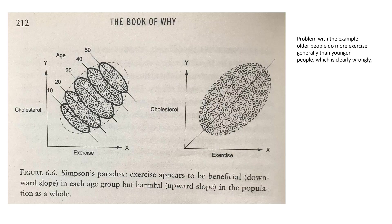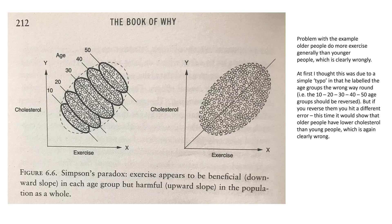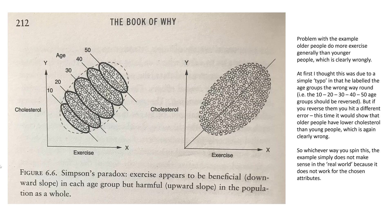The problem with this example is that it doesn't really work in reality, because the data shows that people in the older category are the ones who tend to do the most exercise. Yes, they also have the most cholesterol, but they're doing the most exercise — and that clearly is wrong. Even if you reverse the age category order, that would suggest older people have lower cholesterol than younger people, which is also clearly wrong. So whichever way you spin it, the example doesn't work with those chosen attributes, exercise and cholesterol.